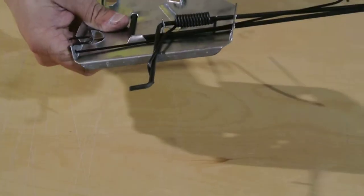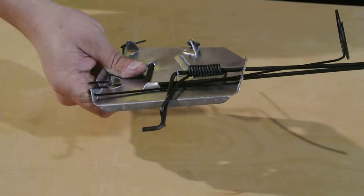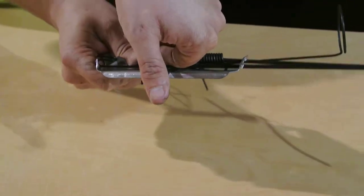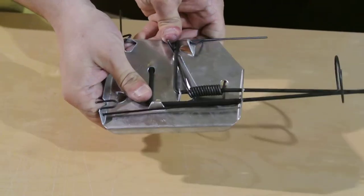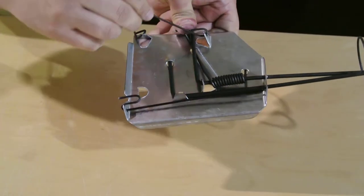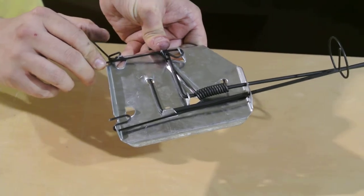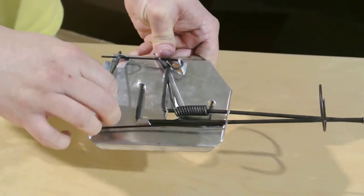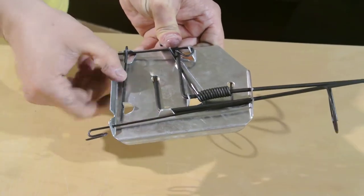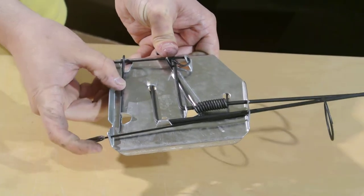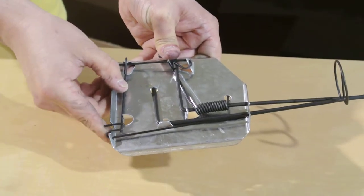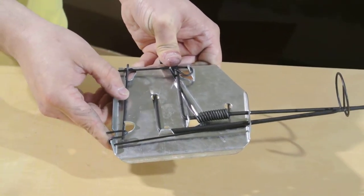I would definitely place it into your hand, bringing the D wire or active wire over across the trap. With that, then you bring the A wire or loop wire over the top of that active wire. Then you'll bring the D wire over the top of your A wire and then slide your C wire or trigger wire into position.